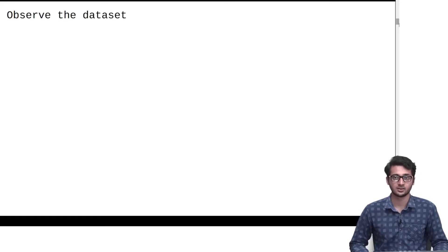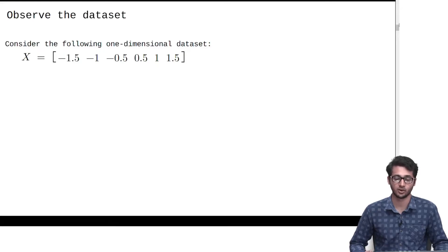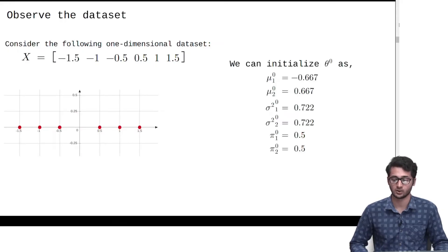First, let us observe a dataset. As you can see, we have 6 points here: minus 1.5, minus 1, minus 0.5, 0.5, 1, and 1.5. We are going to have a look at it in the form of a graph and also with the parameters on the side as shown. These are random initializations for the parameters mu, sigma squared, and pi.